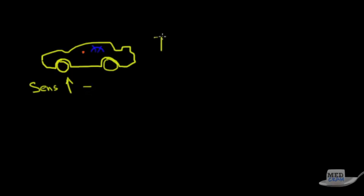You've got a couple of choices — you can either have the sensitivity high or low. With high sensitivity, if a thief tries to break in, the car alarm is probably going to go off. But since you're parked on a busy street, a motorcycle going by could also set it off. If there's a thief and the car alarm went off, that would be a true positive — the alarm went off and sure enough, there's a thief trying to break into your car.